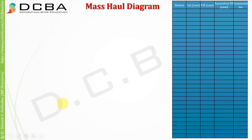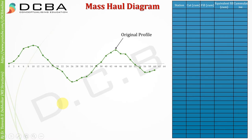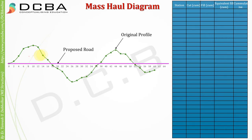This is a new topic called the Mass Haul Diagram. It is related to volumes, the topic we covered in the previous lecture. Consider a ground profile — this is the original profile of the ground and we want to build a road. This ground is not straight or level, it is undulated, and obviously the road we are building should not be undulated — it should be a leveled road.